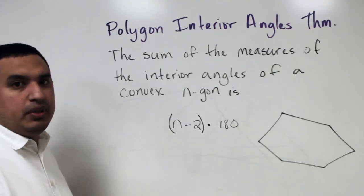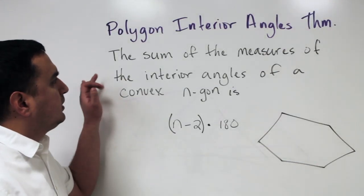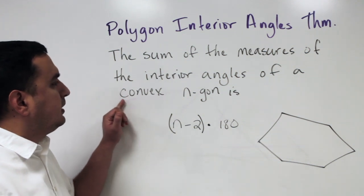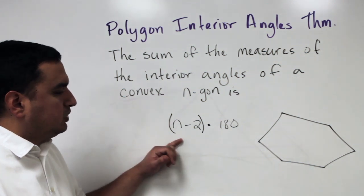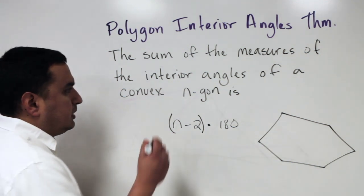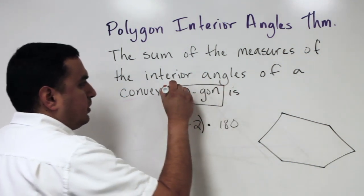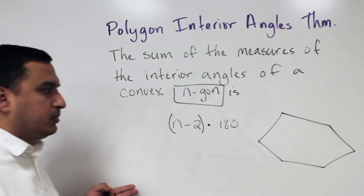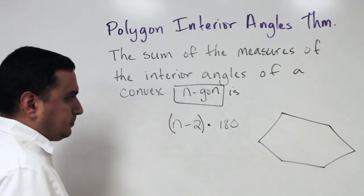The Polygon Interior Angles Theorem says that the sum of the measures of the interior angles of a convex n-gon is (n−2) times 180. The n-gon stands for any polygon with whatever number of sides, and n stands for the number of sides.